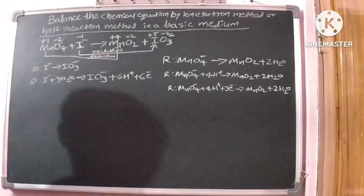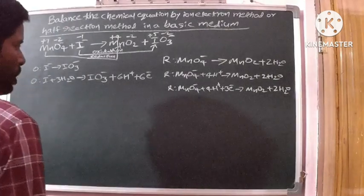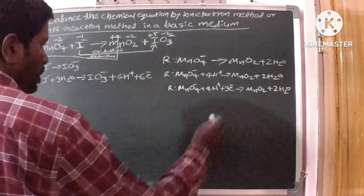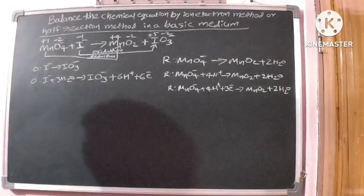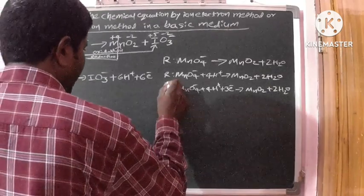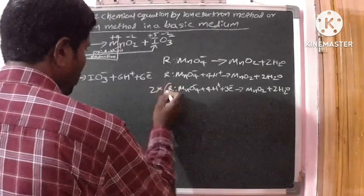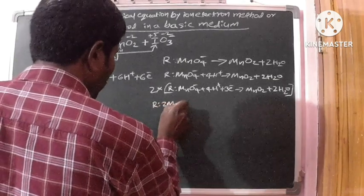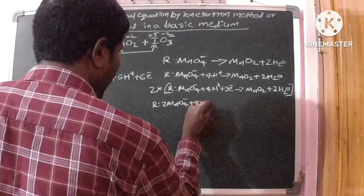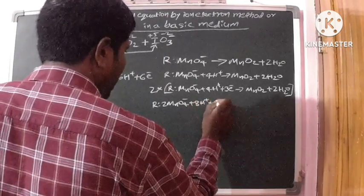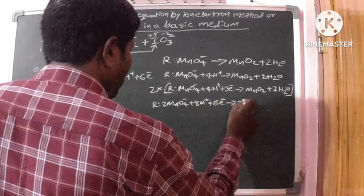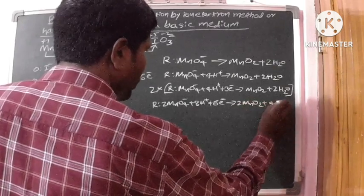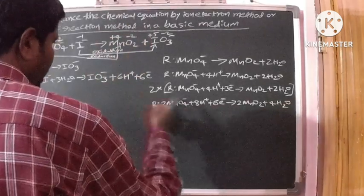We must make electron gain equal to electron loss. The oxidation half reaction has 6 electrons, but the reduction half reaction has only 3 electrons. To equalize them, we multiply the reduction half reaction by 2: 2MnO4⁻ + 8H⁺ + 6e⁻ gives 2MnO2 + 4H2O. Now the number of electrons are balanced in both half reactions.